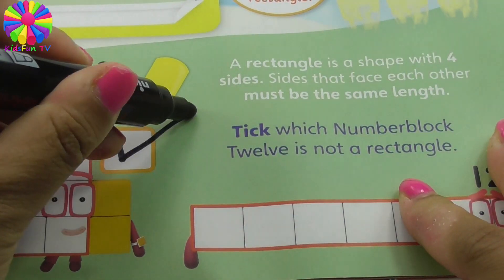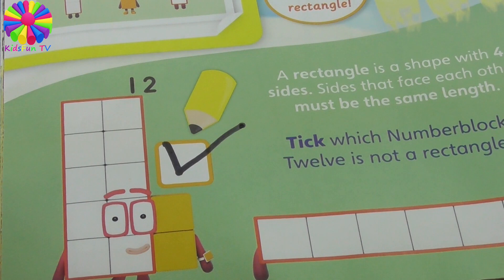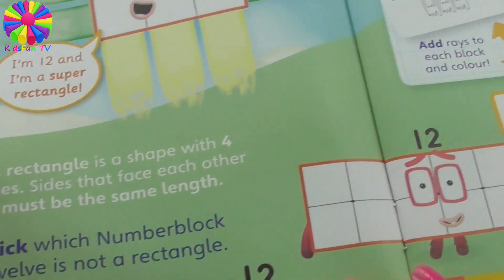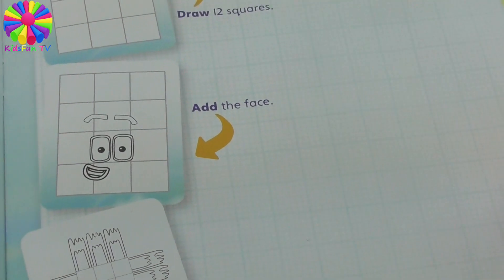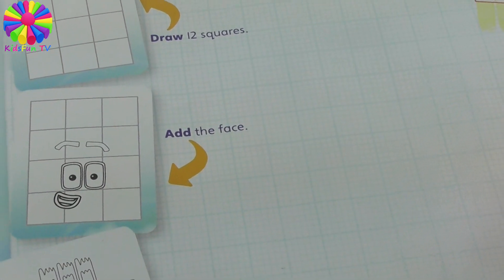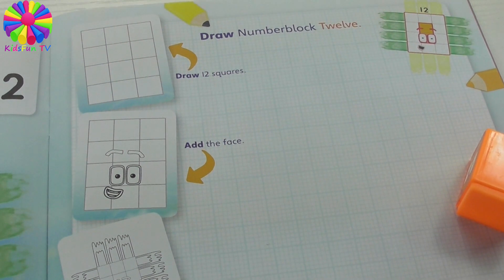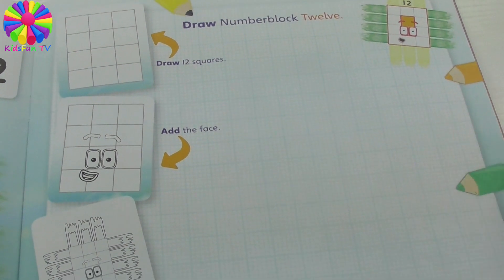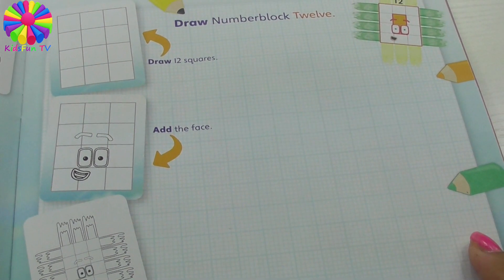This is a rectangle. Is this Number 12 a rectangle? It is a rectangle because it's got four sides and each side is facing each other. This one is not a rectangle because it doesn't have four sides and the sides are not facing each other, so we're gonna tick this box. This box is not a rectangle.